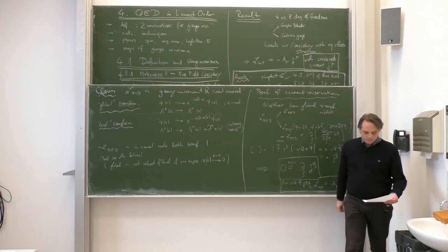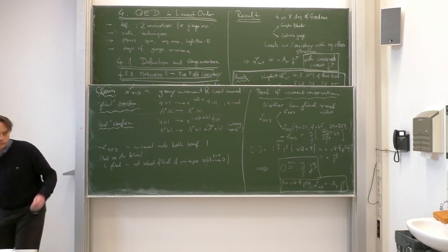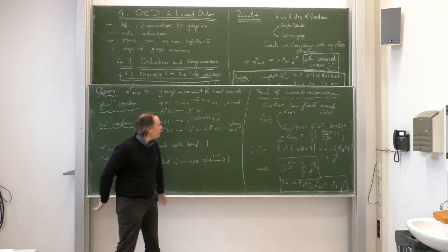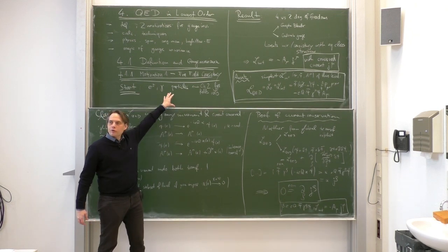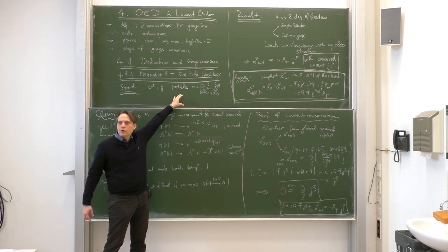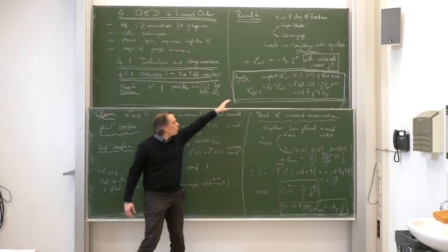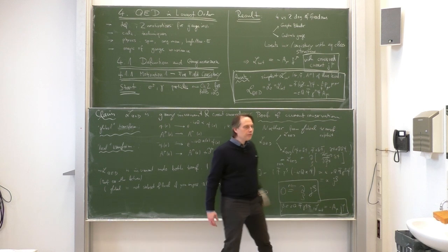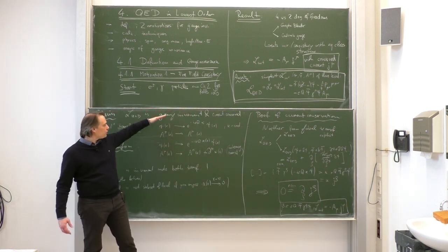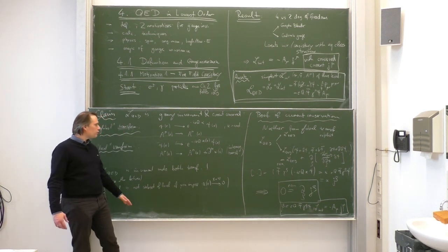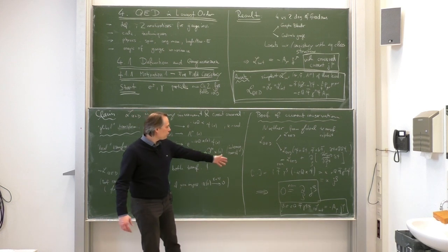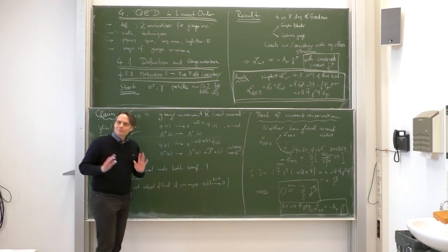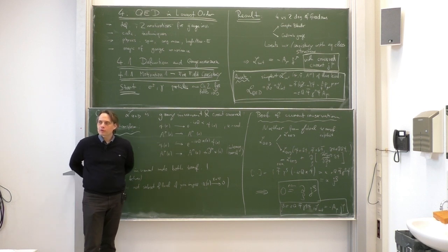The Noether theorem has proven that this quantity is conserved: zero equals D_rho J^rho under the equations of motion. The current J^rho equals e Q Psi-bar gamma^rho Psi, and the interaction Lagrangian is minus A_mu J^mu. That is our first motivation of QED. Starting from the particle content and knowledge of free quantum field theory, we end up with practically a unique simplest interaction term. The Lagrangian has global and local phase invariance, and from the global invariance follows current conservation, which is necessary for the consistency of the theory.